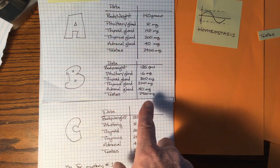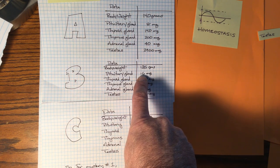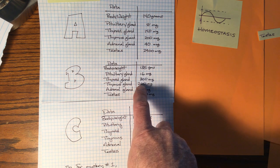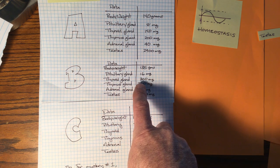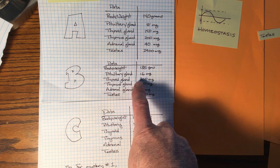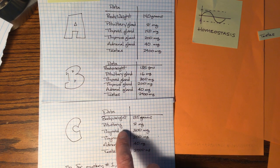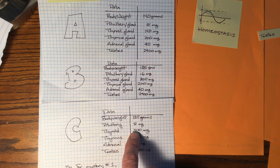And in rat B, the pituitary grew from 12 to 16, so that's an increase. And its thyroid gland also grew from a normal 250 milligrams to 300 milligrams. That's quite an increase. And the same thyroid increase we see in C, meaning the thyroid grew, but the pituitary shrank quite a bit, four milligrams.